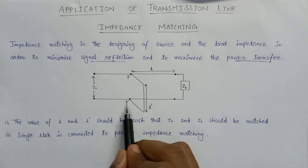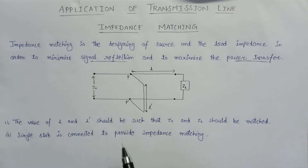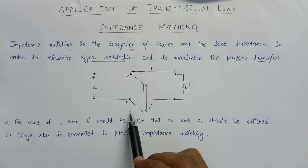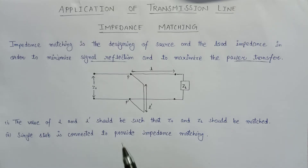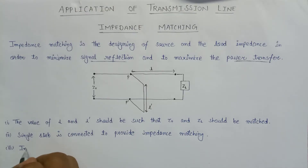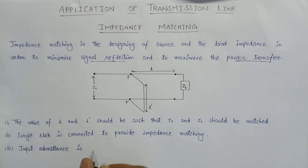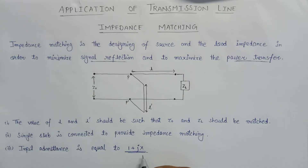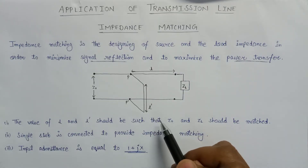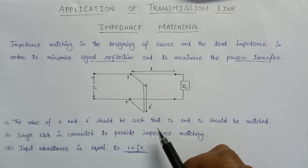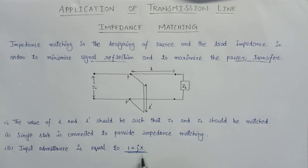The stub should be positioned at P and P' in such a way that the input admittance will be equal to 1 + jx. The length L' of the stub should be chosen so that the admittance of the stub becomes −jx, so that the total admittance after adding (1 + jx) with (−jx) becomes 1 only.